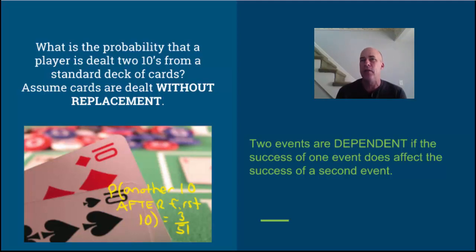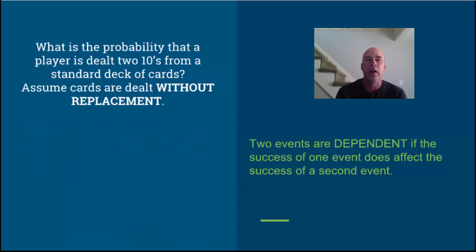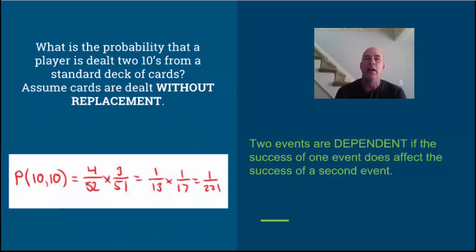Keep in mind when we do multi-stage events, we multiply the probabilities. So the total probability of getting a 10 and then another 10 is 4/52 times 3/51. You'll notice we'll want to do some reducing here. 3/51 is one of those goofy fractions that does reduce - it's 1/17. So the probability of getting two 10s in sequence from a shuffled deck of cards is 1/221.